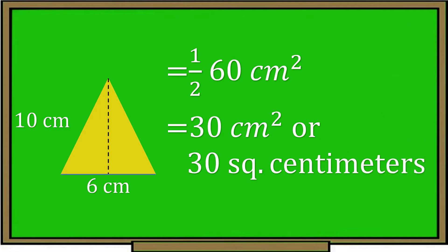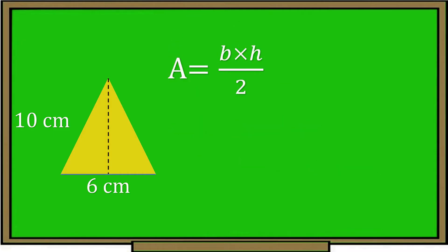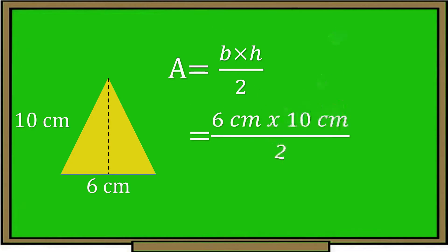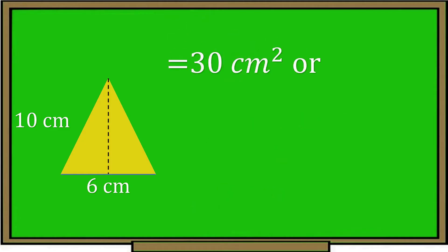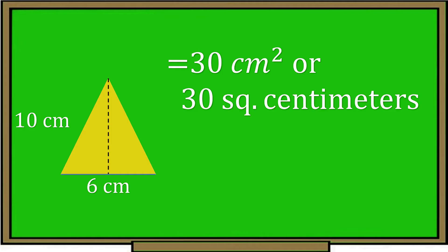One half of 60 centimeters equals 30 square centimeters. The area of the triangle is 30 square centimeters. We can also use this formula: Area equals base times height divided by 2. Let's substitute the values — base is 6 centimeters and height is 10 centimeters. 6 centimeters times 10 centimeters equals 60 centimeters divided by 2, and the answer is 30 square centimeters. So the area of a triangle is 30 square centimeters.